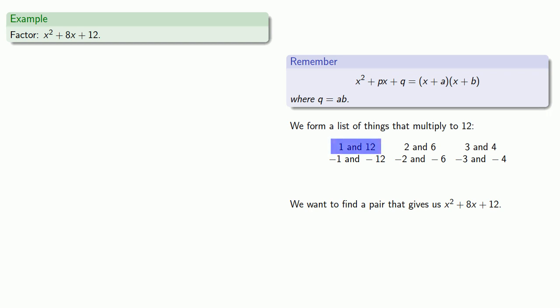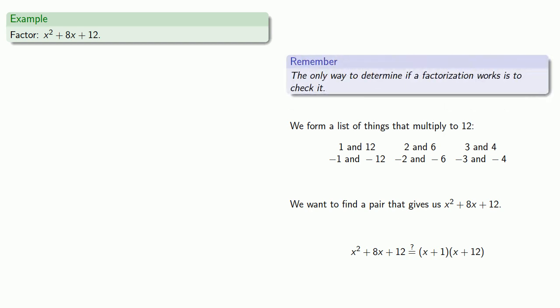Our first pair is 1 and 12. The question you've got to ask yourself is: Is x squared plus 8x plus 12 the same as x plus 1 times x plus 12? And remember, the only way to determine if a factorization works is to check it. So we try 1 and 12 and check. We'll want to expand the right-hand side. Now, if you think about it, that expansion won't be too difficult. Remember, the x and the x have to be there because they multiply to x squared. The 1 and the 12 came from the things that multiply to 12. So we know that when we expand the right-hand side, it's got to have an x squared and it's got to have a plus 12. And so the only thing that we have to check out is what's the x term.